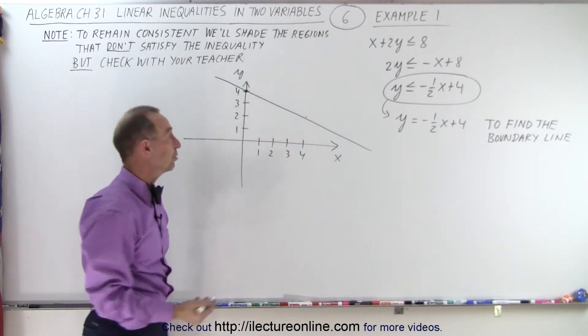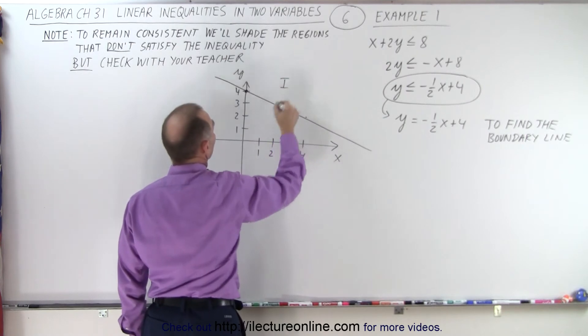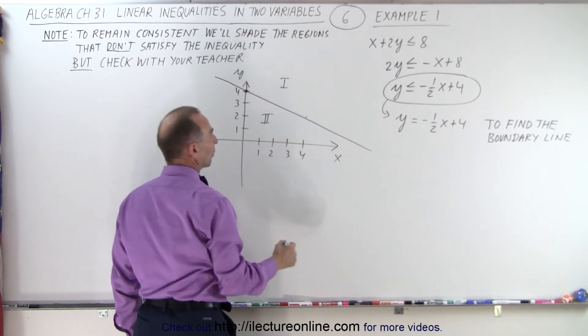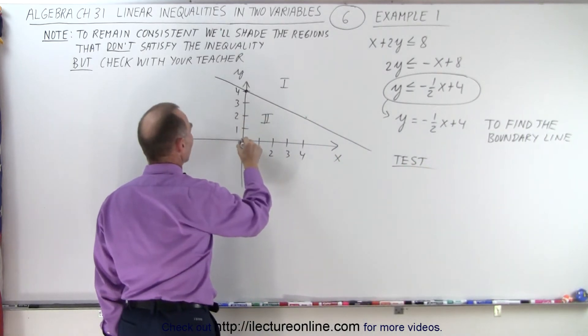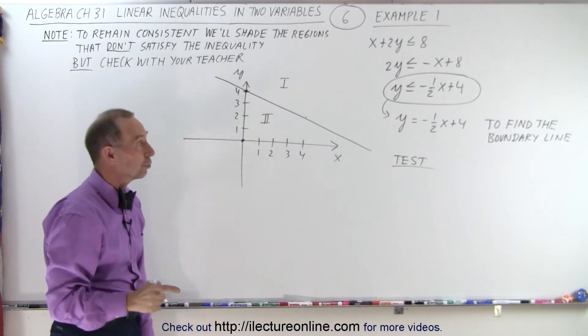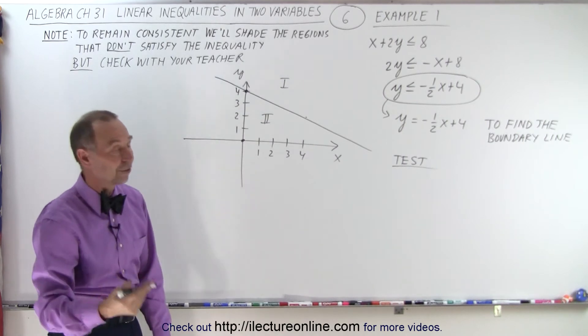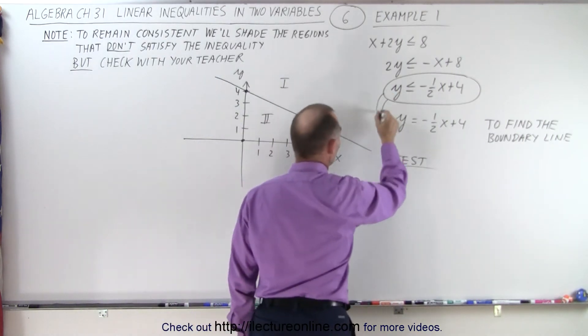So now we have two regions. We have region number 1 and region number 2. Now we're going to test the regions. Let's pick the easy point, (0, 0). We're going to plug that into the inequality to see if it's satisfied or not satisfied.